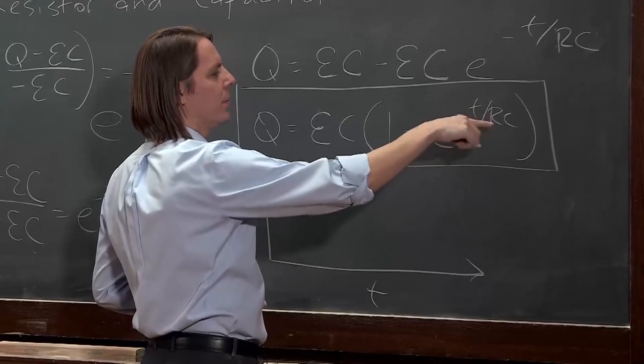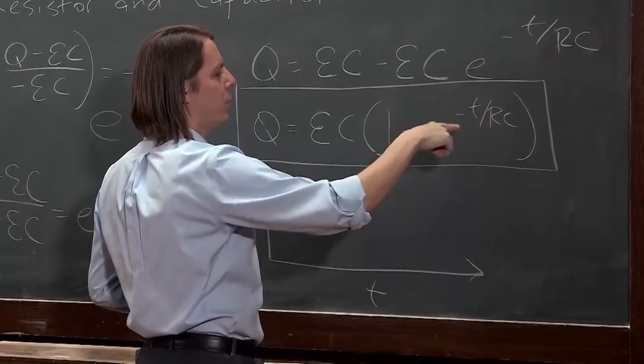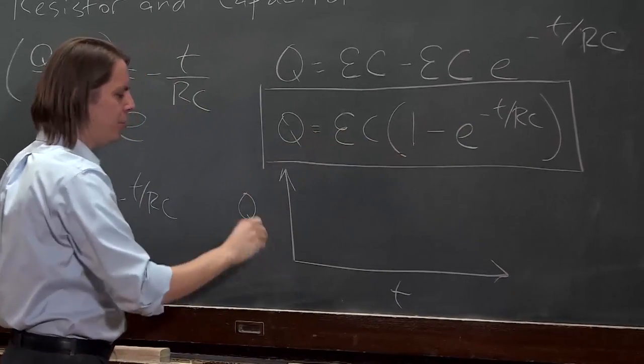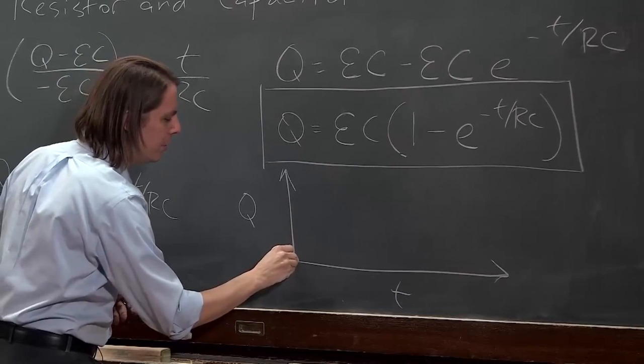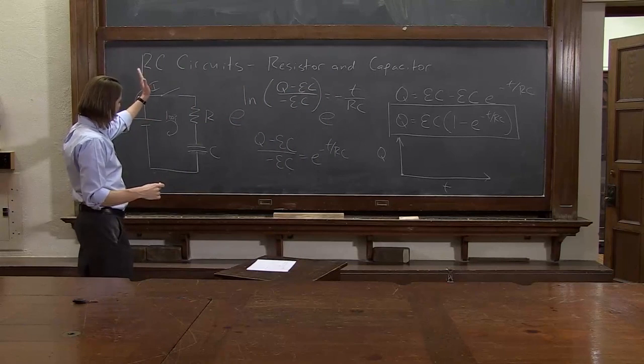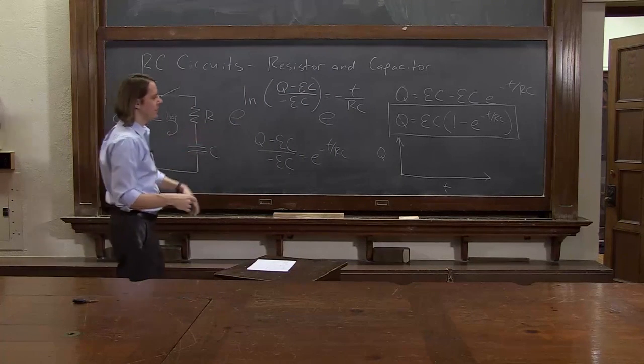E to the zero is one. It doesn't matter what all this is. If we have E to the zero, that's one. One minus one is zero. It doesn't matter what Q max is. Q is supposed to be zero at T equals zero. It had better be, because that's what we put in our integral limits. So when we flip the switch, we set it with zero. So sure enough, you get zero.